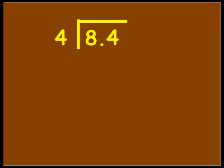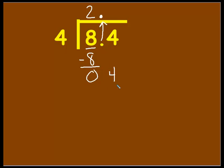Our next problem, we're going to be dividing 8 and 4 tenths by 4. Just like we did last time, we're going to raise that decimal straight up, and then divide like normal. 4 goes into 8 two times, so we put a 2 right above the 8 in the ones place. Then we multiply 2 times 4, which is 8. Subtract, get 0. Then bring down the 4. We know that 4 goes into 4 one time, so the 1 goes directly above the 4 in the tenths place.